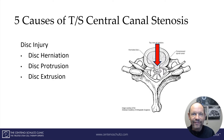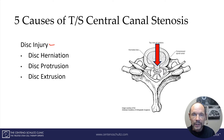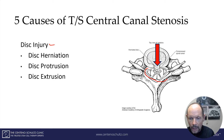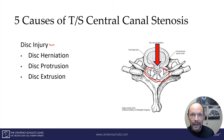Let's talk about the five major causes of thoracic spine central canal stenosis. The first is a disc injury — it can be a disc herniation, extrusion, or protrusion, as depicted here. This is the central canal and the bony column, and you can see with this disc protrusion it forces backward and makes the canal tighter, creating stenosis. That's the first cause of thoracic central canal stenosis.